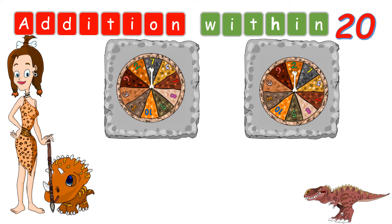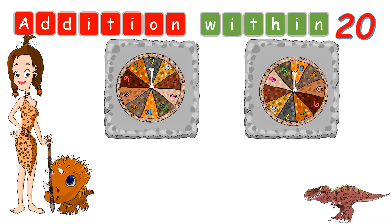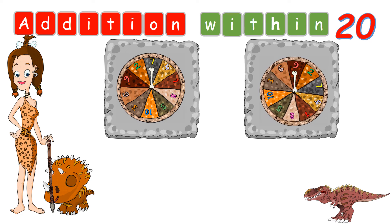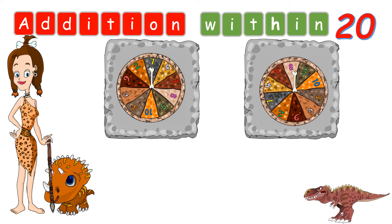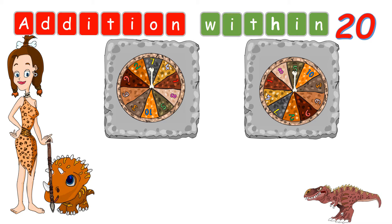The first number is 7. Let's see what is the second number. The second number is 5. So we have the first number as 7 and the second number as 5. So what does 7 plus 5 equal to?